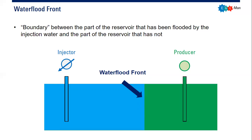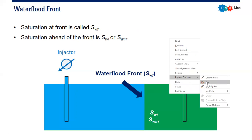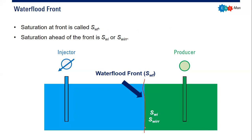The saturation at the water flood front is called Swf. The saturation ahead of the front is the initial water saturation, which can also be the irreducible water saturation or connate water saturation — this applies if it is a new water flood. The Swf is higher than the initial or irreducible water saturation.